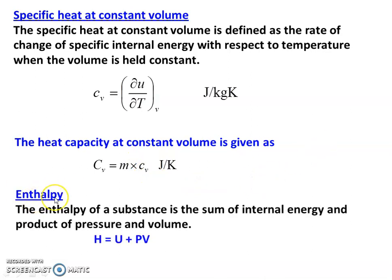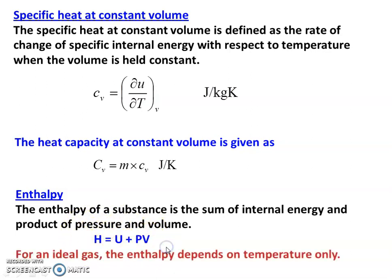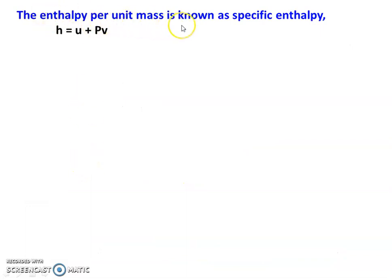Next, there is a thermodynamic property: enthalpy. The enthalpy of a substance is the sum of internal energy and the product of pressure and volume. So H equal to U plus PV. This is very, very important. For an ideal gas, enthalpy depends on temperature only, and internal energy is also a function of temperature only. Enthalpy per unit mass is called specific enthalpy: small h equal to small u plus P times small v, where small u is the specific internal energy and small v is the specific volume.